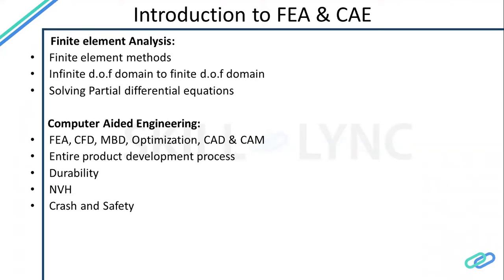Optimization is about optimizing a design — for example, decreasing the weight of a component. Combined with CAD and CAM, CAE forms the entire product development process bundle. The entire product development process is based on computer-aided engineering, which everyone in industries is following today. There are three main domains: durability, noise vibration and harshness (NVH), and crash and safety.